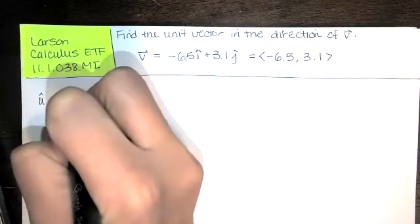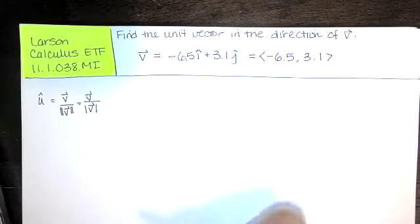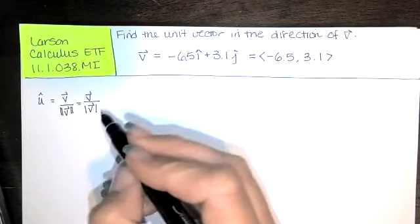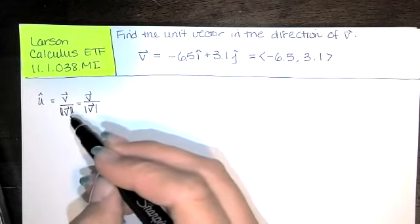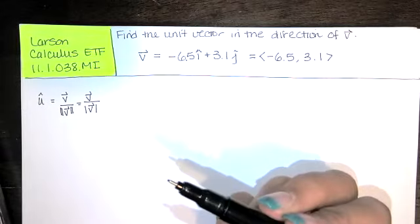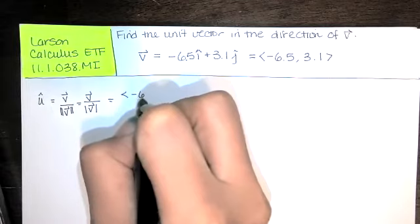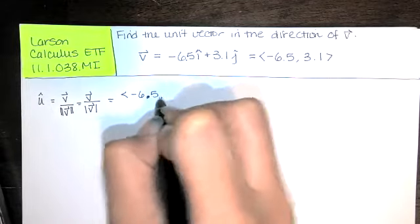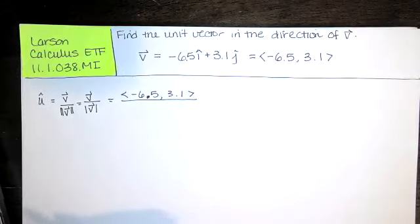Now, you can use this notation with the double bars, or you can use this other notation that looks more like absolute value. That's my preference. After Calculus 3, you'll see this more, but in Calculus 3, this is the notation we tend to use. So really, we're just going to take the vector with components negative 6.5 and 3.1, and we'll divide by this length. So that's the plan. We have stated our formula.